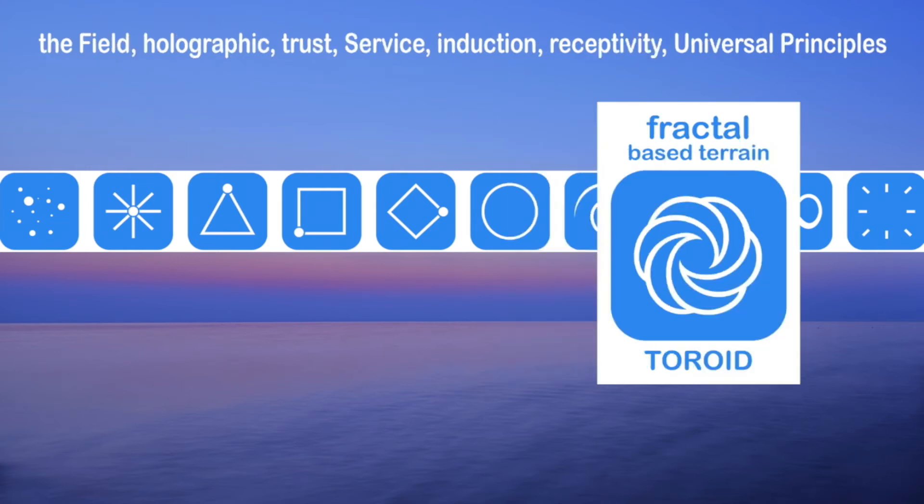And then the terrain after that, the fractal-based terrain toroid, this is the terrain where someone has a really embodied understanding of the quantum field and the universal principles, and a lot of the great religious teachings and scientific teachings and profound teachings have come through awakened beings who are at this fractal-based terrain toroid.